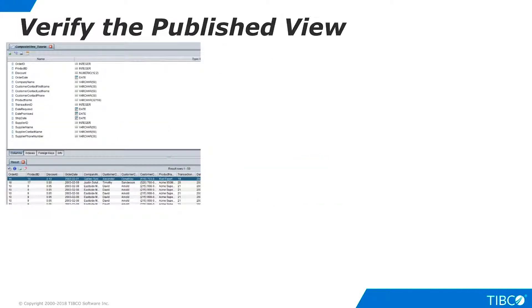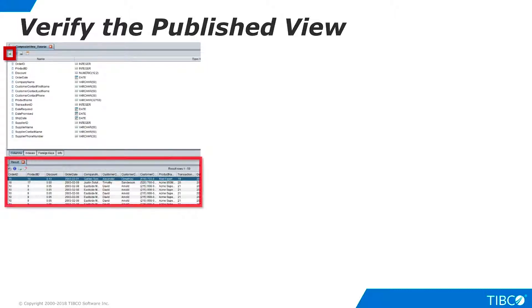Now you can open the published view and examine its column names and data types. Click Show Contents to bring back a small sample of the data. Our published view is working correctly.